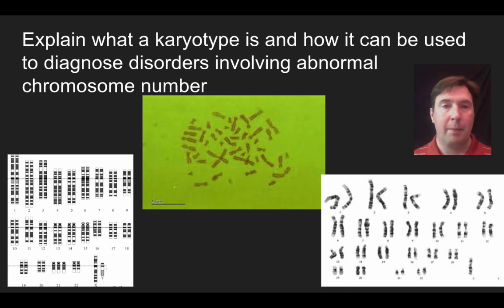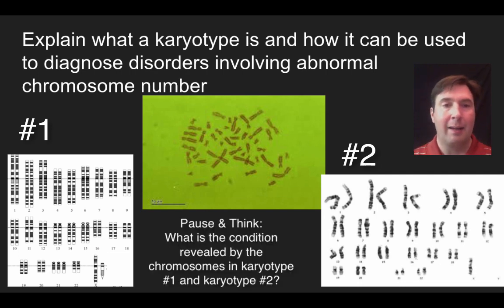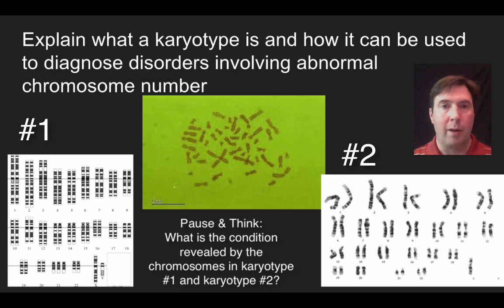I have two karyotype samples here — one on the left, which we'll call number one, and one on the right, which we'll call number two. Pause and think: what is going on with each of these two karyotypes? Try to make a diagnosis based on each one.